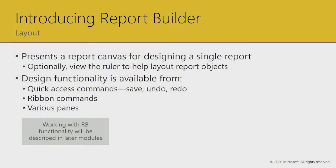Let's begin on the topic of layout. In Report Builder you'll see the report canvas for designing a single report at a time. Optionally, you can add a ruler to help guide placement with accuracy, although there are great alignment tools already built in. Many authors rely on the snap-to-grid type layout instead of the ruler. Design functionality is available from quick access commands, and there's a ribbon with a host of commands, plus various panes useful for configuring different types of report items.